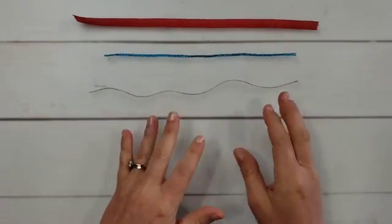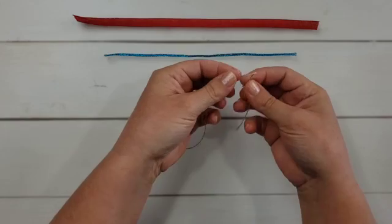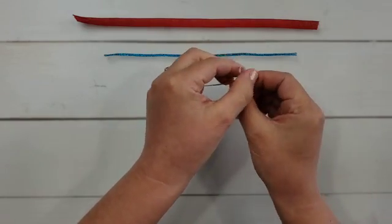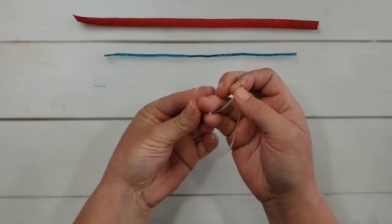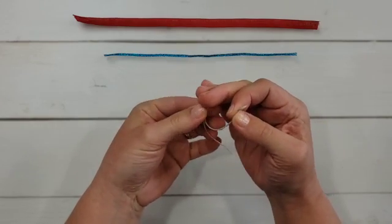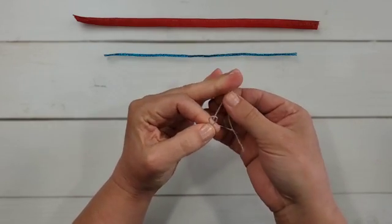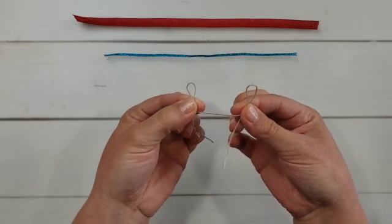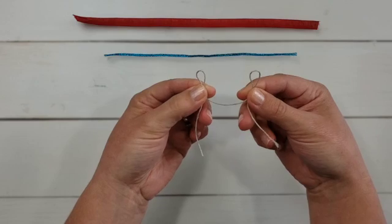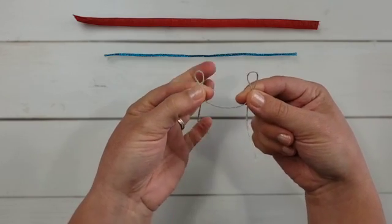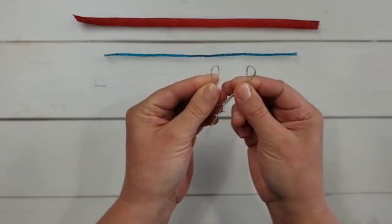You want to start with maybe eight inches or a little bit more. The more you have, the easier it will be to work with. If you don't have enough it's going to make it difficult, so definitely start with at least eight inches. What you want to do is make a loop in each hand, hold it between your thumb and your forefingers. You're going to have a tail hanging down with a loop in each hand.